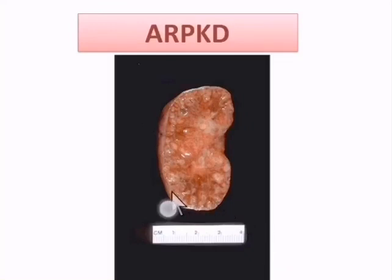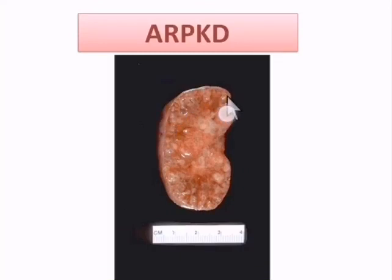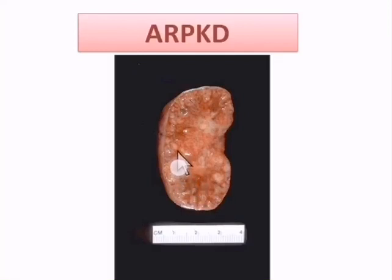This slide shows autosomal recessive polycystic kidney disease, or childhood polycystic kidney disease. The kidneys are large in size, but the outer surface is smooth. The cysts are small and numerous. As we know, the child or infant dies from chronic renal failure.